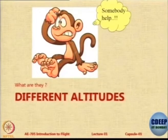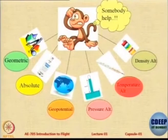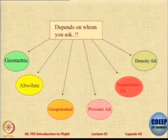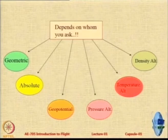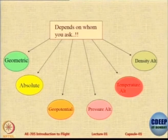Now we come to altitudes. Interestingly, in aerospace there are actually six altitudes which are defined. Today we will look at only three of them. Depending on whom you ask — the air traffic controller, the pilot, the person on the ground, the meteorologist, the aircraft designer, the performance engineer — there could be different answers for the altitude.